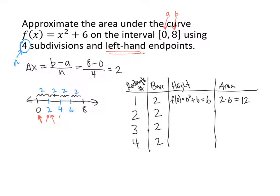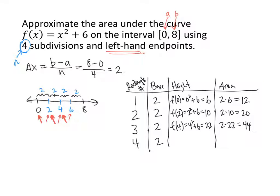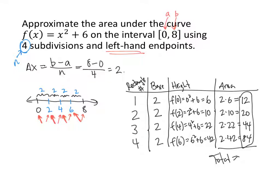For rectangle 2, the interval is 2 to 4, left endpoint is 2. f(2) = 2² + 6 = 10. Area is 2 × 10 = 20. For rectangle 3, interval is 4 to 6, left endpoint is 4. f(4) = 4² + 6 = 22. Area is 2 × 22 = 44. For rectangle 4, interval is 6 to 8, left endpoint is 6. f(6) = 6² + 6 = 42. Area is 2 × 42 = 84. Adding all areas: the total is 160.